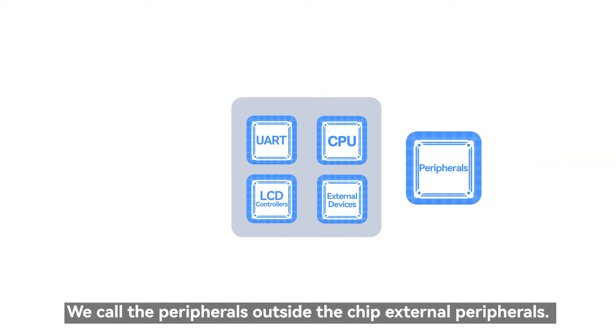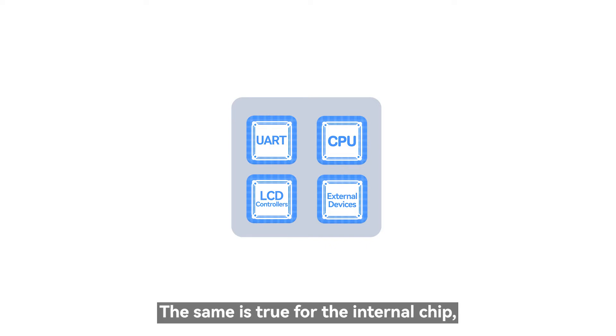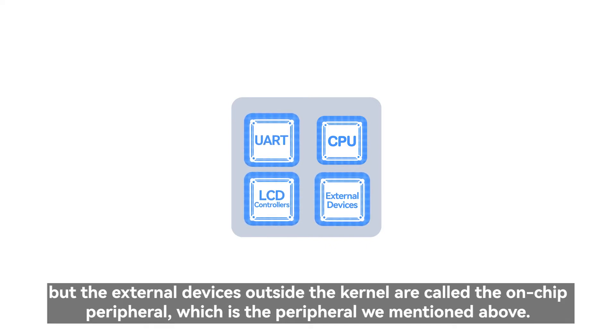We call the peripherals outside the chip external peripherals. The same is true for the internal chip, but the external devices outside the kernel are called the on-chip peripheral, which is the peripheral we mentioned above.